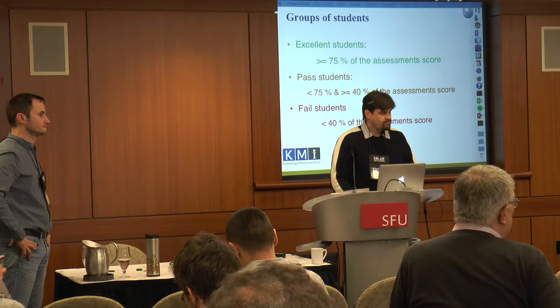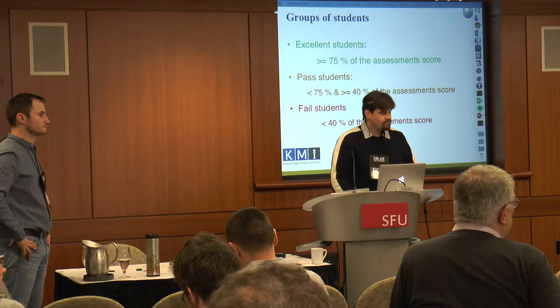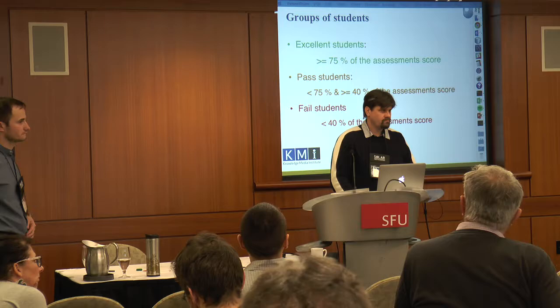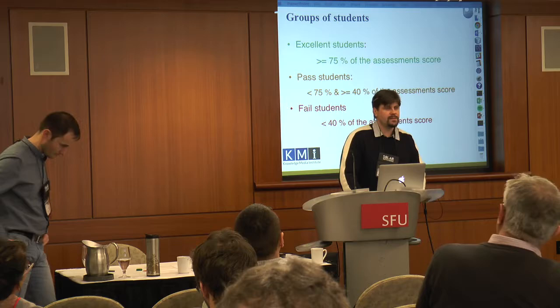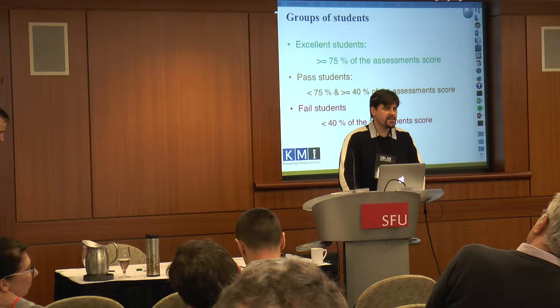Question: Could you talk a little bit about the size of your populations — were they equally distributed amongst the three groups, and roughly how many students were there? Answer: In one course, it's something like 1,000 students. In the excellent group it's something like 600 students, in the pass group something like 400 to 450 students, and the fail group is around 300 to 350 students.